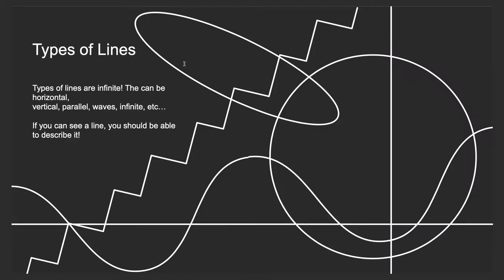Types of lines are infinite. They can be horizontal, vertical, or wavy. If you can see a line, you should be able to describe it. You can be creative in the words that you use, but if you see a line in an artwork, try to figure out how to talk about it.